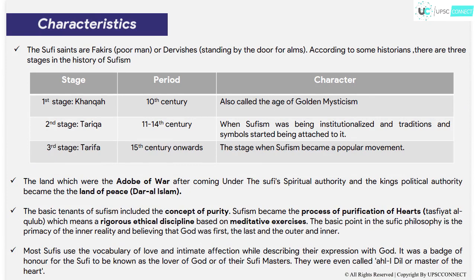The characteristics of Sufism — the Sufi saint is known as Fakir or Dair. According to historians, there were three stages of Sufism: Khanka, Tarika, and Tarifa. The first stage, Khanka, was in the 10th century, known as the Golden Mysticism Age. The second stage, Tarika, spans the 11th to 14th century, when Sufism was institutionalized and traditions and symbols were developed. The third stage, Tarifa, is after the 15th century, when Sufism slowly became a popular movement.